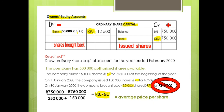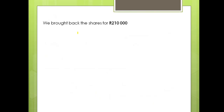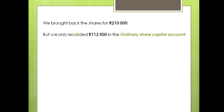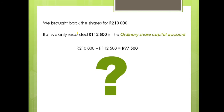The last step is to close off or balance the account. Let's review: we bought back the shares for 210,000, but we only recorded 112,500 in the ordinary share capital account. When we subtract 112,500 from 210,000, we get 97,500. What happens with this remaining amount? If you really want to know, let's meet in the next video — thank you.